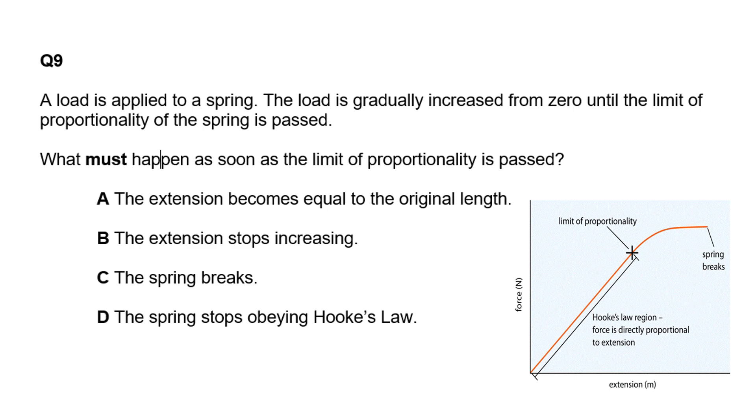A load is applied to a spring. The load is gradually increased from zero until the limit of proportionality is passed. I've drawn you a diagram so you can see what this looks like on the graph. What must happen as soon as the limit of proportionality is passed? Essentially it stopped obeying Hooke's law because Hooke's law relies on it being a straight line graph. When you've gone past the limit of proportionality it stops being a straight line, so it stopped obeying Hooke's law. The other options are not true—the spring doesn't break until later, extension doesn't stop increasing.